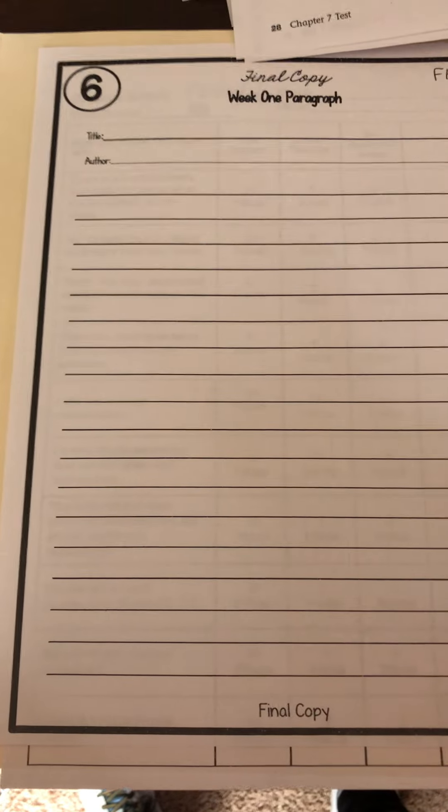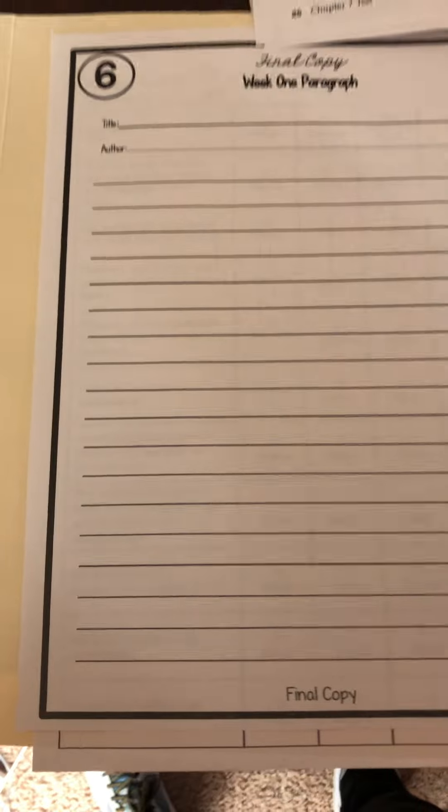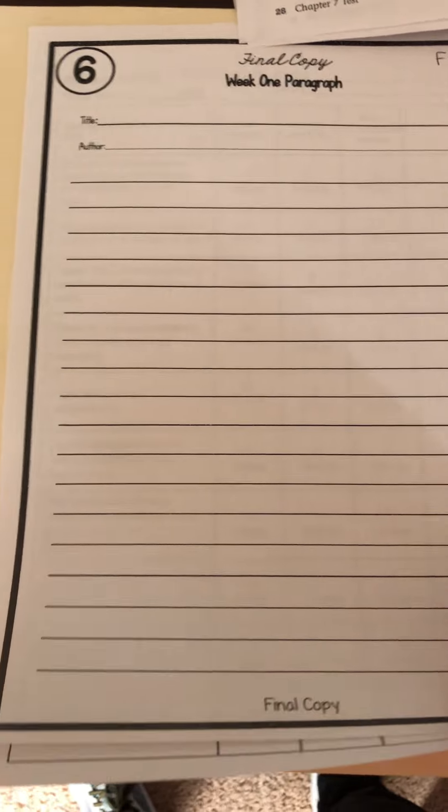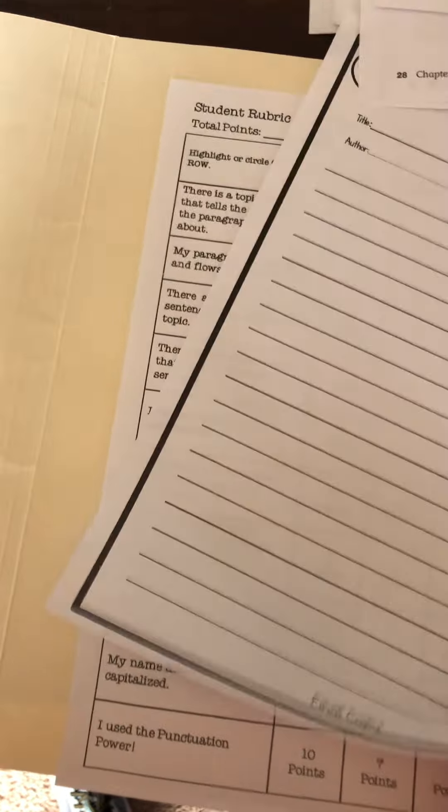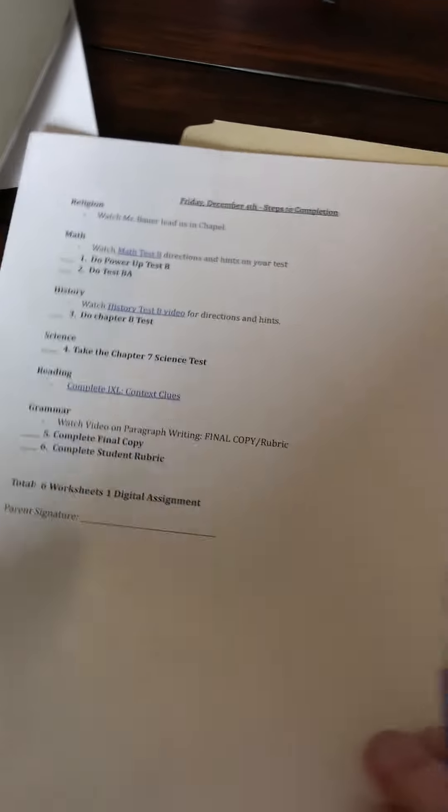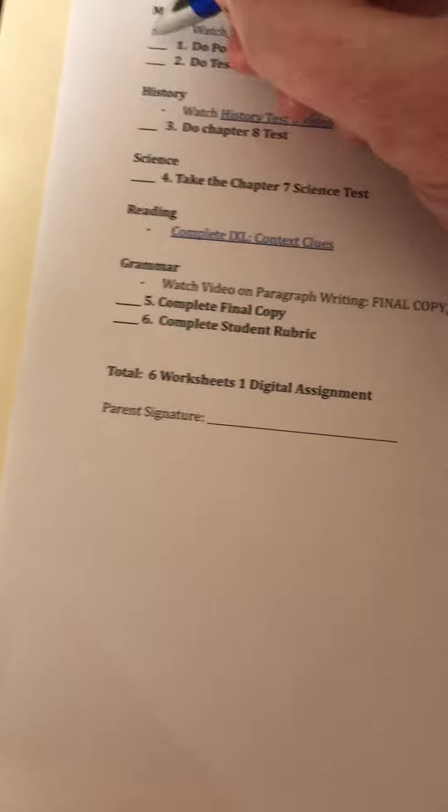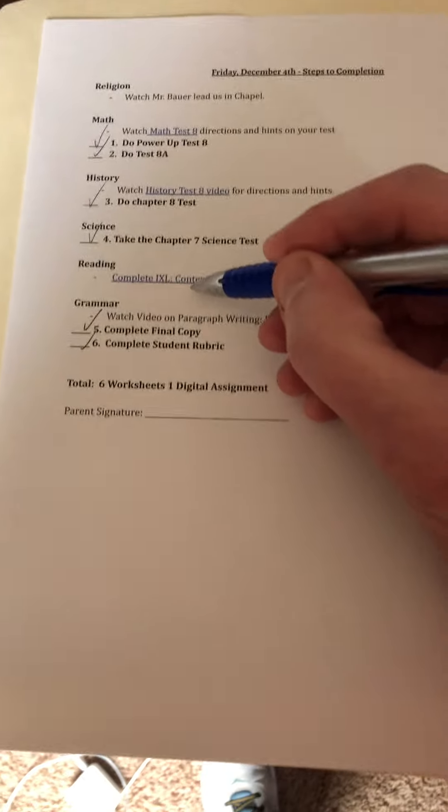Okay now I don't teach Mrs. Bowers class so I don't have the answer keys to this one, but it said for my steps to completion five and six, so I have five and six. Now as I go back over here I'm gonna sign off on that. I saw math, I saw the other math test, I saw the history test, I saw the science test, this was hopefully completed, so I have these two done.